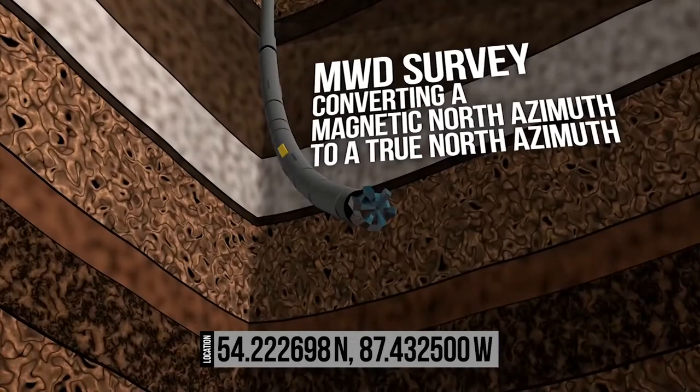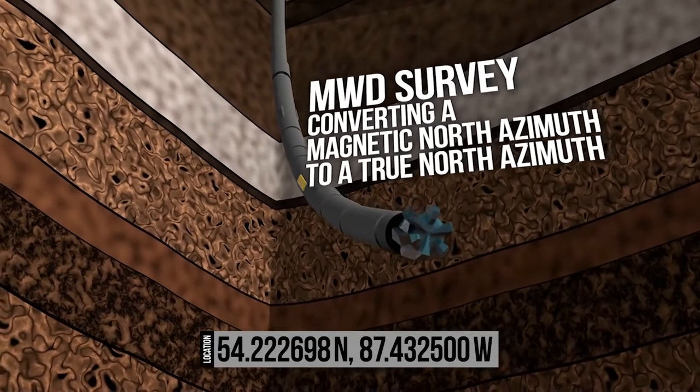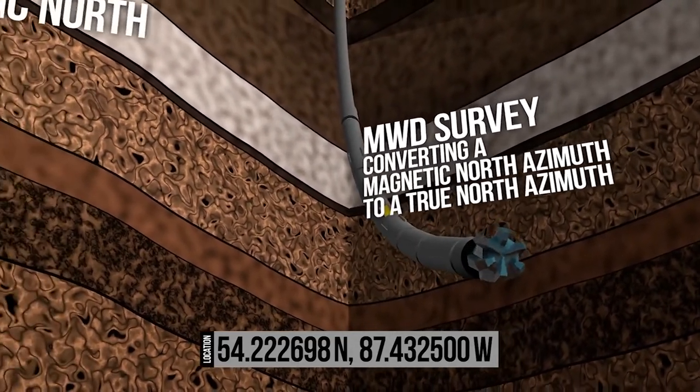Failure to account for magnetic declination would mean the MWD surveys are referencing a moving target, that is, magnetic north.